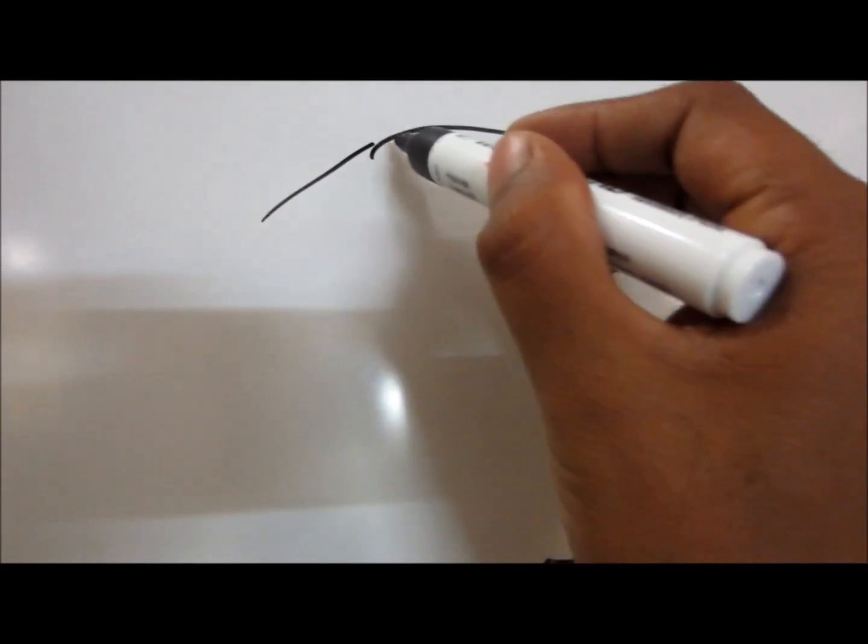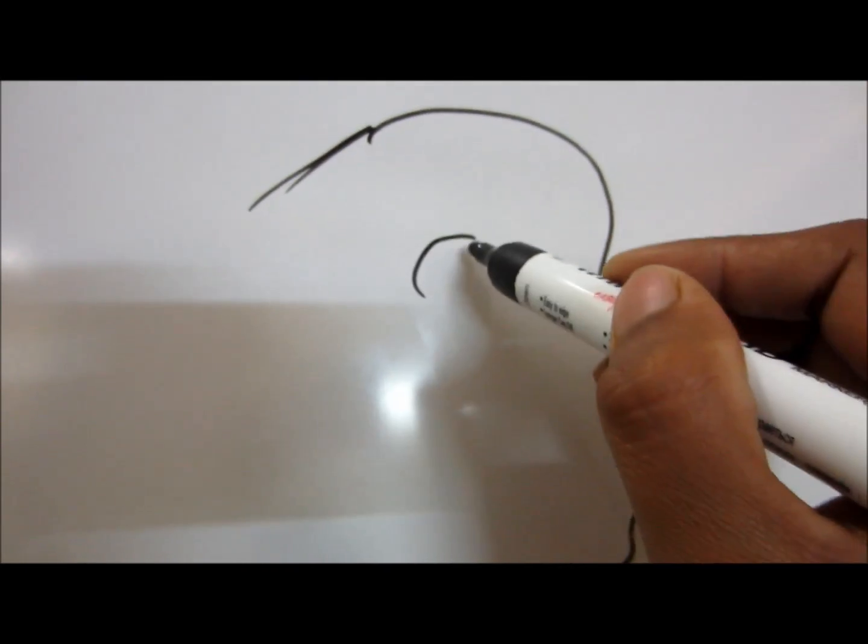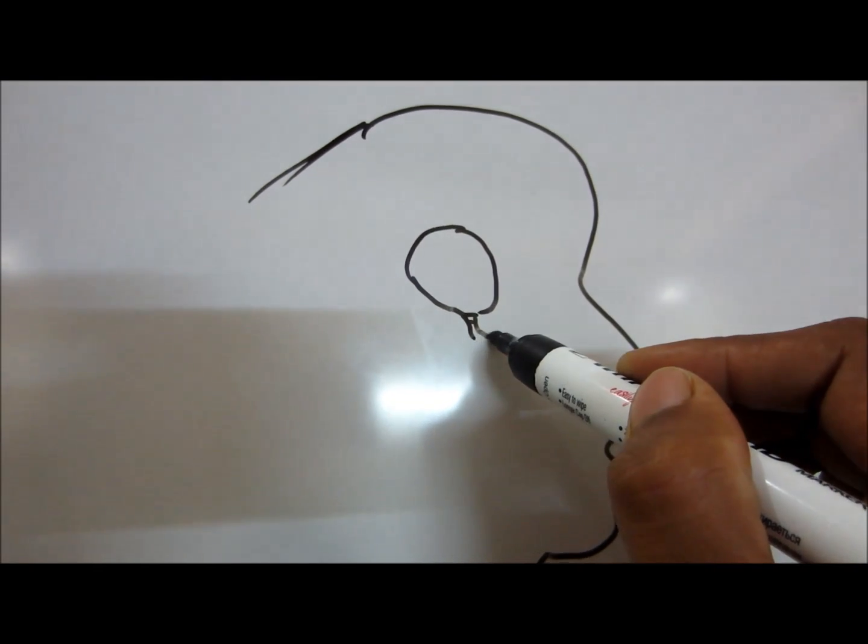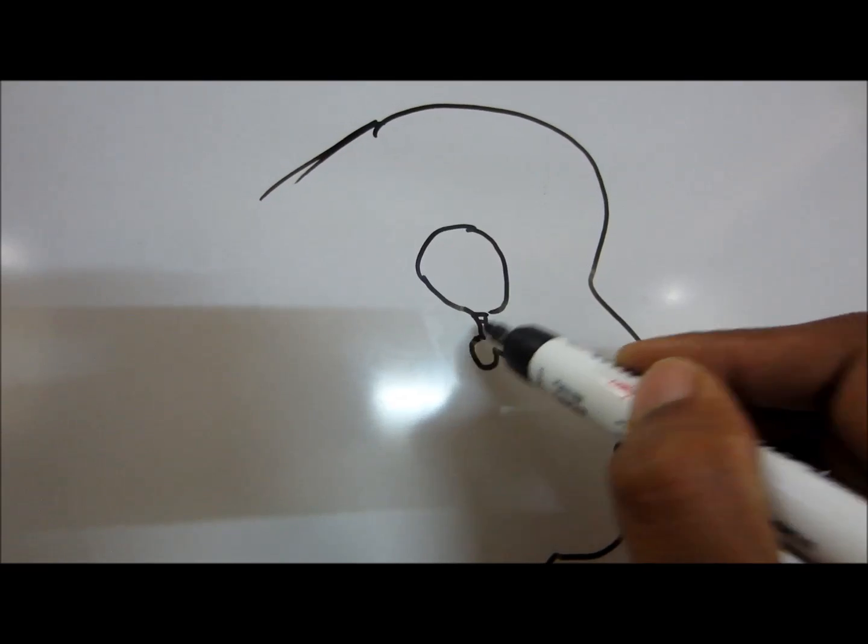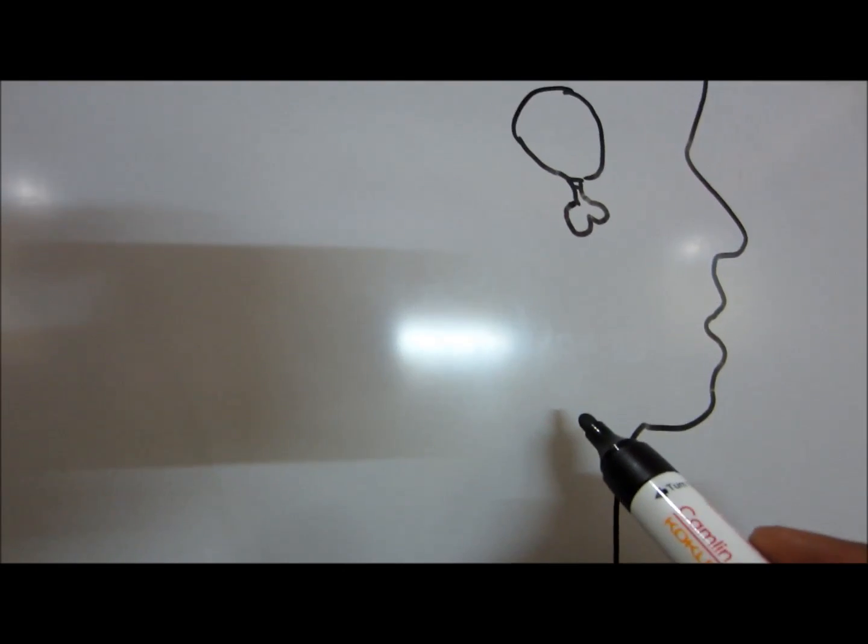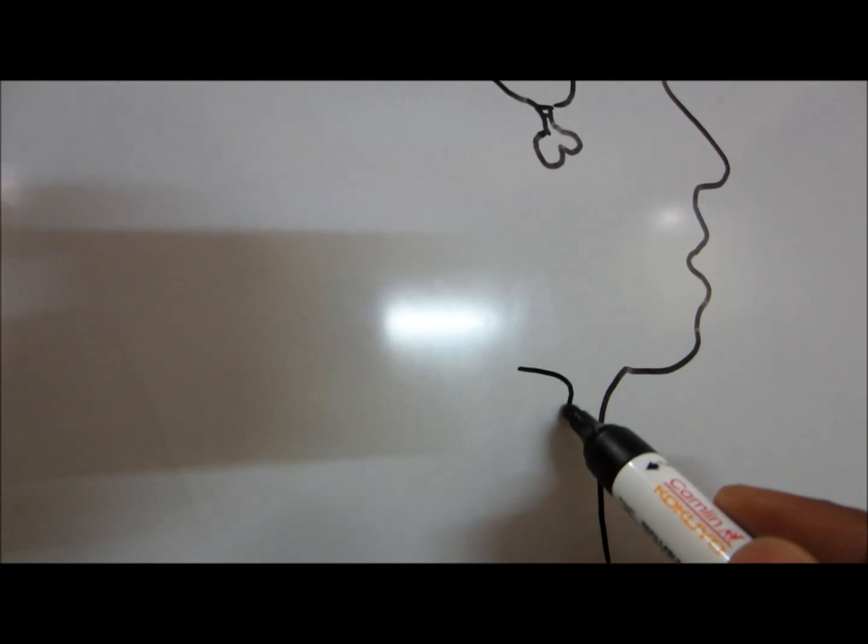So here, somewhere here lies the hypothalamus. Below there lies the pituitary, the anterior part of pituitary and the posterior part of the pituitary. And here lies your thyroid gland.